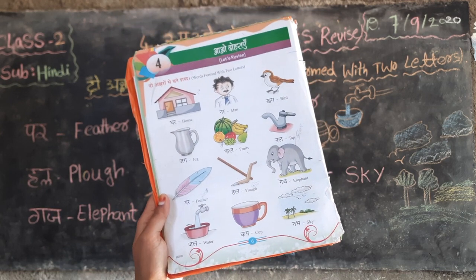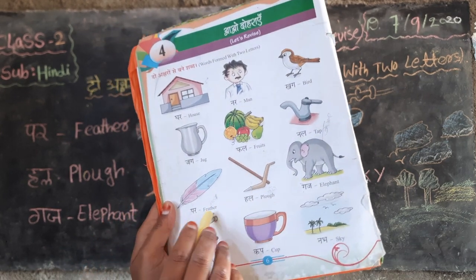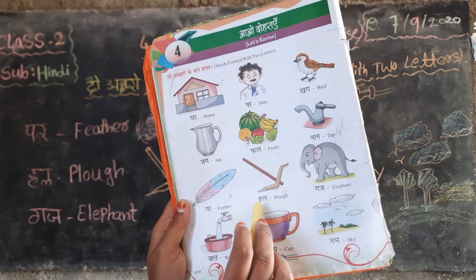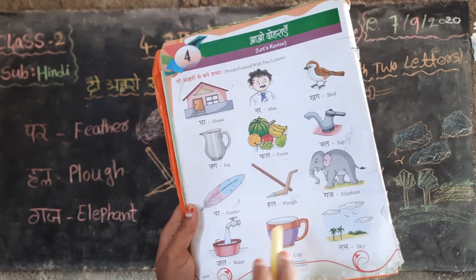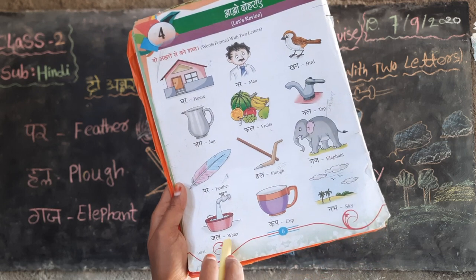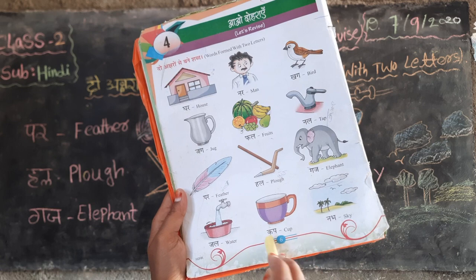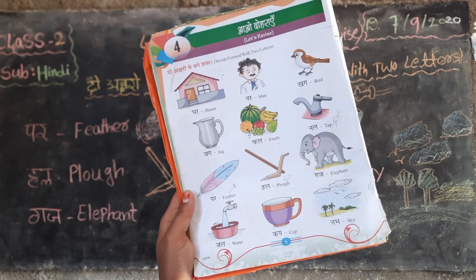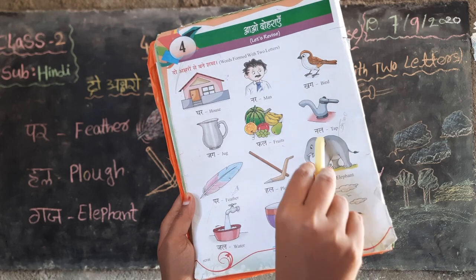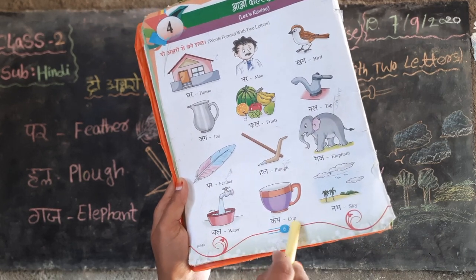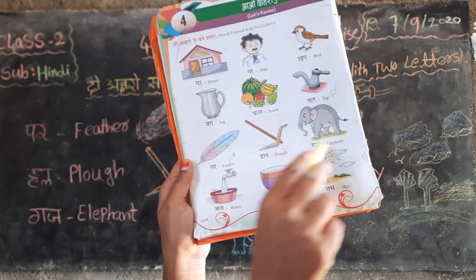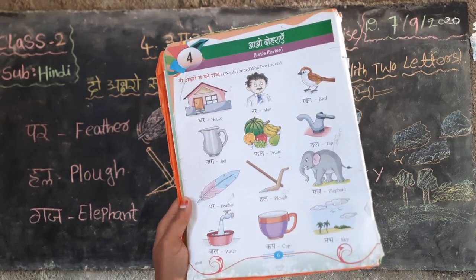Page number six. See this. Once again repeat. Fur, feather — F-E-A-T-H-E-R, feather. Hull — flower, P-L-O-U-G-H. Elephant — E-L-E-P-H-A-N-T. Gel — water. Cup — C-U-P. Nub — sky, S-K-Y, akasham. These meanings, send message on WhatsApp. Thank you.